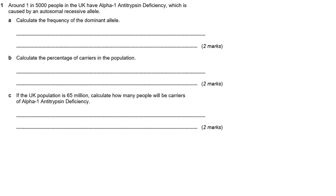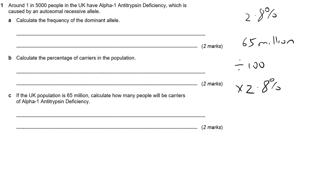So in the last part of the question, it asks us to calculate how many people would be carriers if there's a population of 65 million. From the previous question, we know 2.8% of the population are going to be carriers. So we simply take the 65 million, divide by 100 to get 1%, and then times it by 2.8 to get 2.8% of 65 million. And that gives a value of 1.82 million.